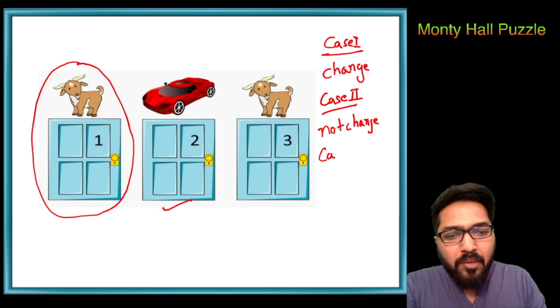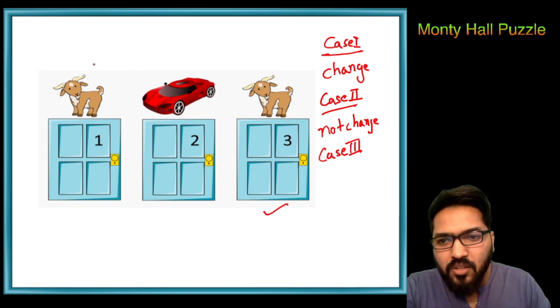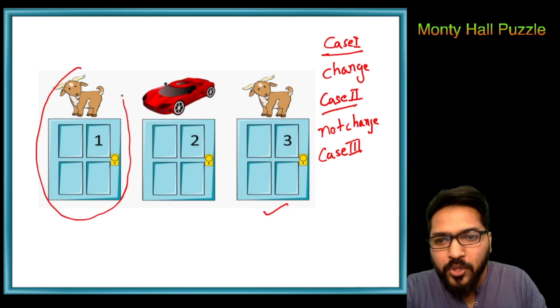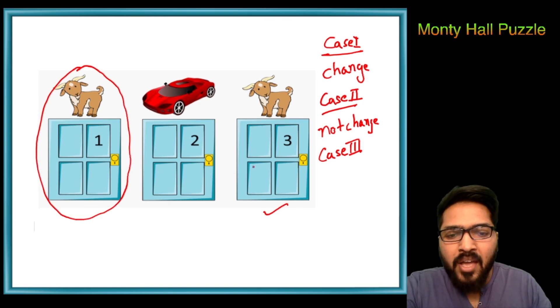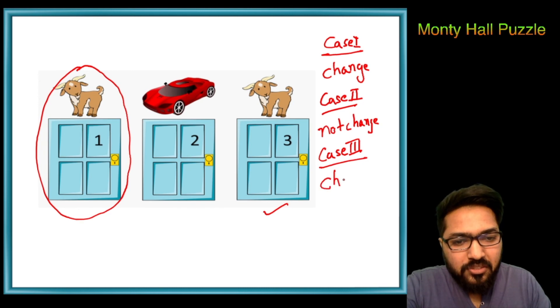Now the answer is going to depend upon our case three. Chalo, case three dekhte hai. So case three mein kya hai? Ki agar woh third door ko choose karta hai. Now obviously the game show host is going to open this door. The contestant will be asked whether he wants to switch from three to two. Now to win the car, he should change his decision.